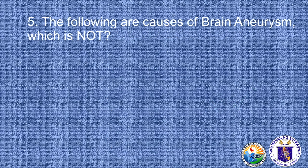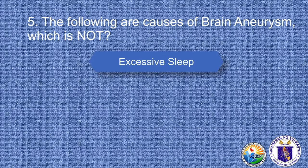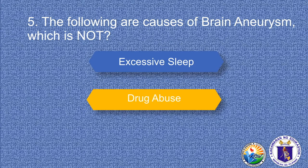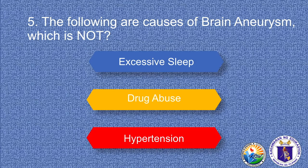And last, number five: the following are causes of brain aneurysm — which is not? Excessive sleep, drug abuse, or hypertension? The answer is definitely excessive sleep, because it has nothing to do with brain aneurysm. That was an awesome review.